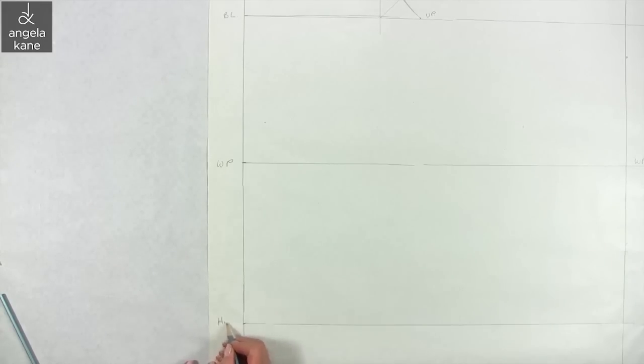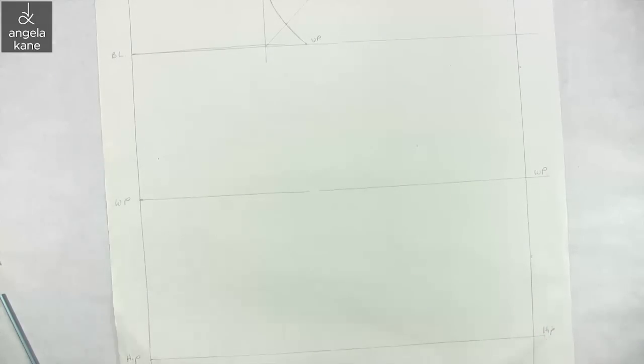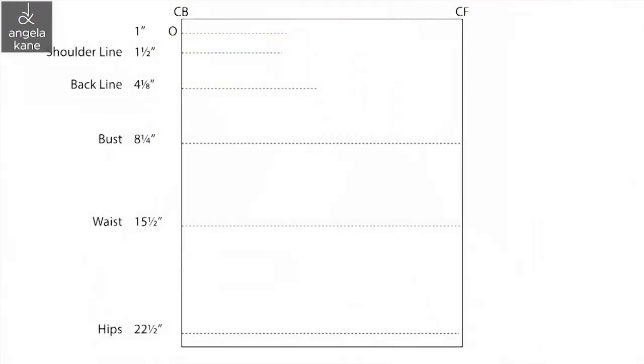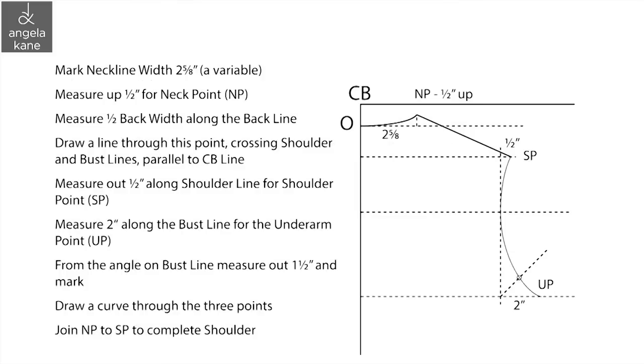So to recap, this is what we have done so far. Center back and center front, bust waist and hip lines. The back neckline, shoulder line and a cross back line. We have found the neck point, shoulder point and drawn in the back shoulder seam. We have found the underarm point and drawn in the back armhole curve.